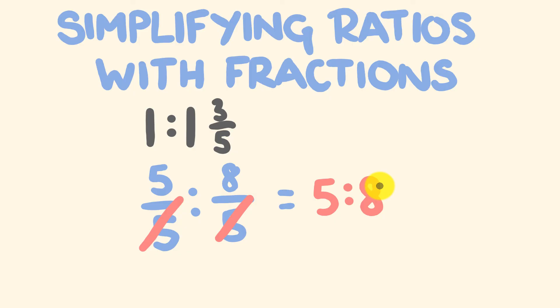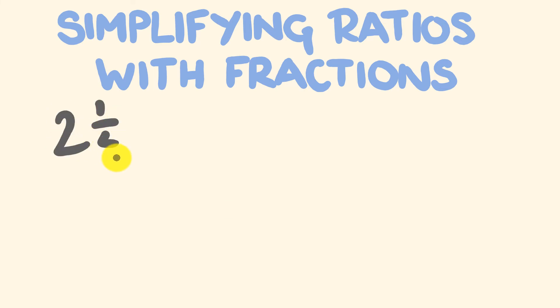What about one more of these nasty ones? For our last example, let's go 2 and a quarter compared to 1 and one half. Let's see what we get when we do this. So first off, we're going to change these into improper fractions. 2 times 4 is 8, plus 1 is equal to 9, and that goes over 4.